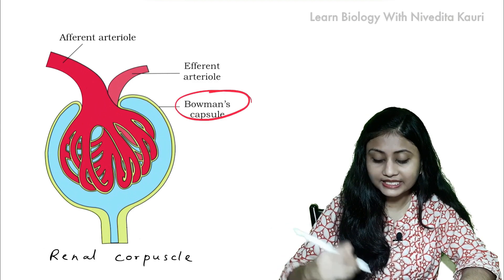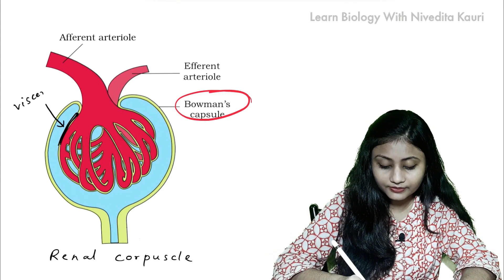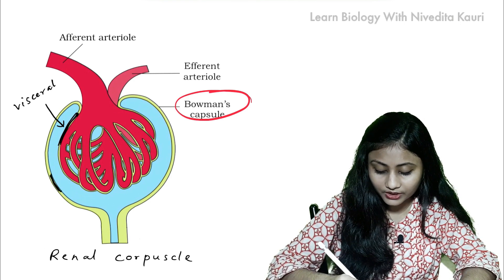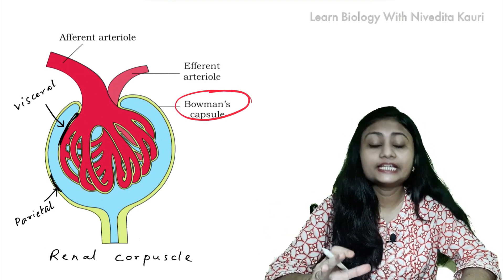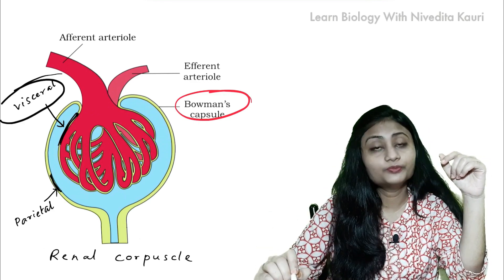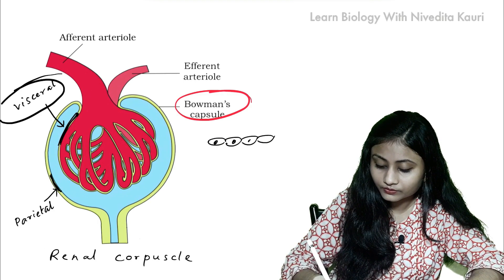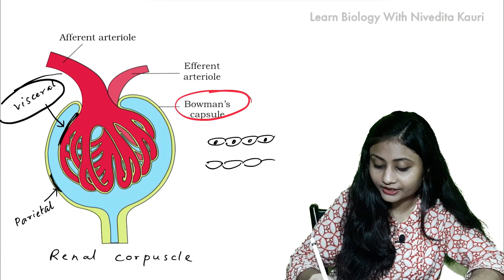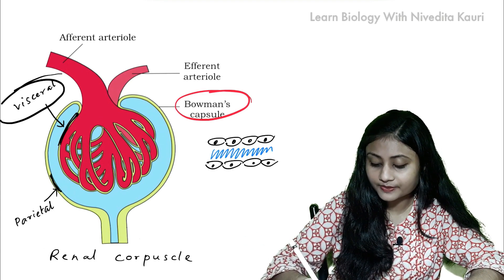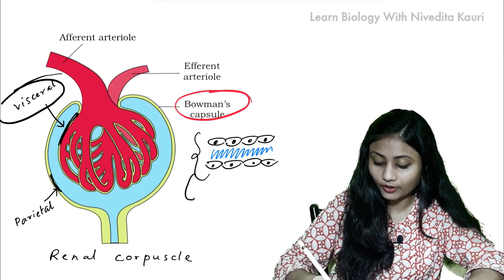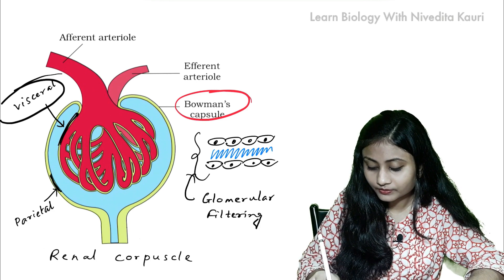The Bowman's capsule has two layers: the inner visceral layer and the outer parietal layer. The glomerular capillary lies in close proximity to the visceral layer of the Bowman's capsule. The capillary endothelium, the visceral epithelial layer of the Bowman's capsule, and the fused basement membrane between these two collectively form the glomerular filtering membrane.